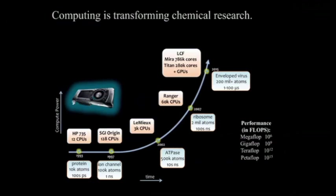This probably does not come as a surprise to anyone in the audience, but computing is really transforming chemical research — and actually not just chemical research but research in general. What I'm showing here, just to build the excitement from the computing standpoint, is a plot that shows the available computing time on the supercomputers in the United States that are available for research, as a function of time.